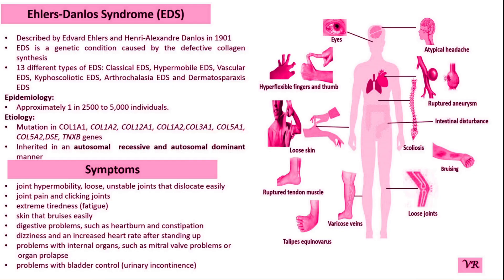Mutations in the COL1A1 and COL5A1 genes are a common cause of EDS. The COL1A1 gene is present on chromosome 17 and consists of 52 exons. The size of the gene is approximately 80 kilobases.